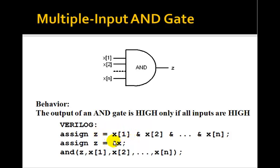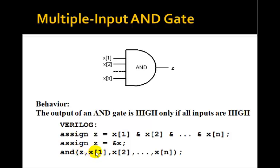Verilog also has what's called a reduction operator. You could just say assign z equals ampersand x — that's the same as writing them all out. And we can use the gate instantiation statement, which will instantiate a multiple-input AND gate in which the output z has these N inputs.